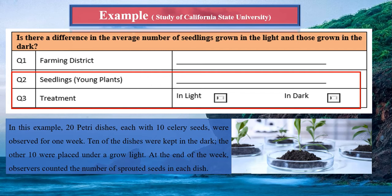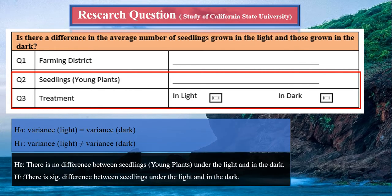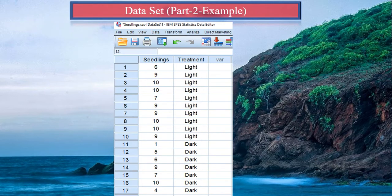The research question is: is there a difference in the average number of seedlings grown in the light area versus those grown in the dark area? The null hypothesis is that there is no difference in plant growth between the light area and the dark area. The alternate hypothesis is that there is a significant difference in plant growth between the two areas.